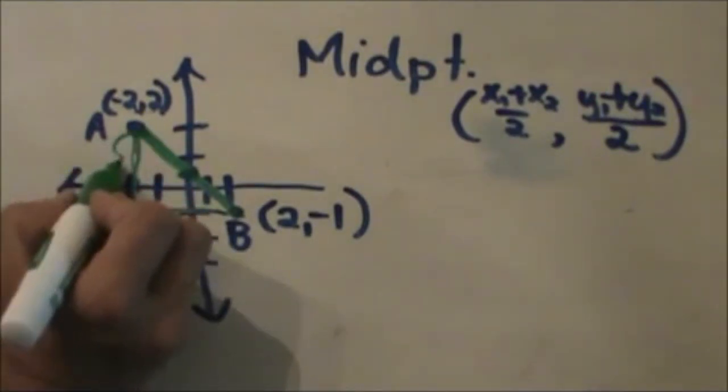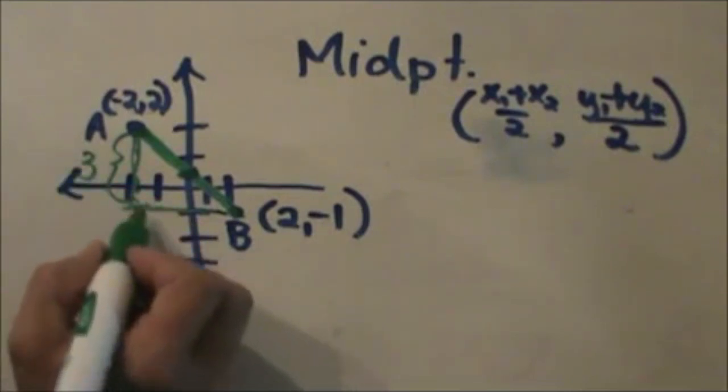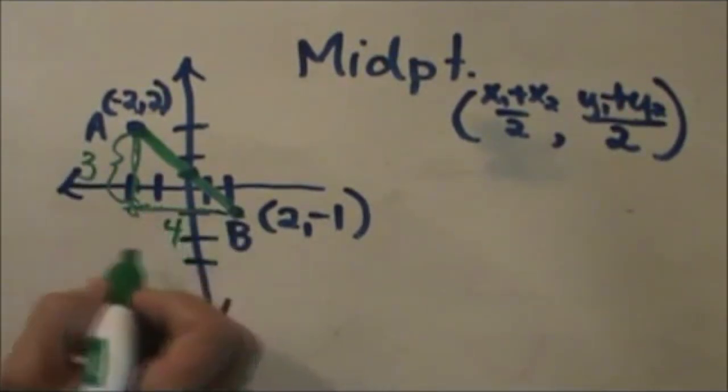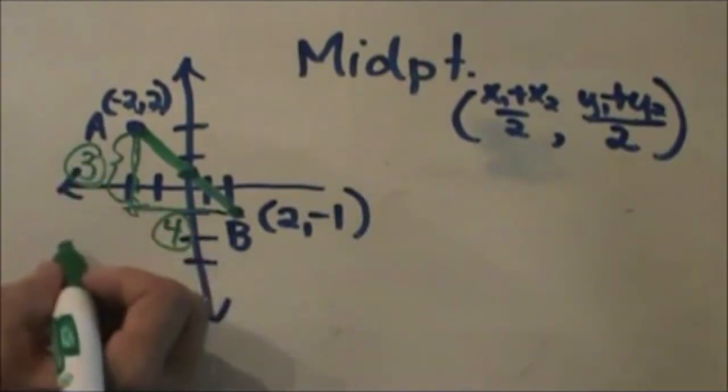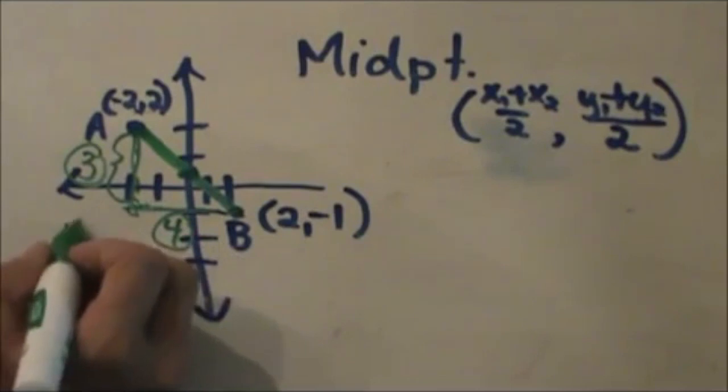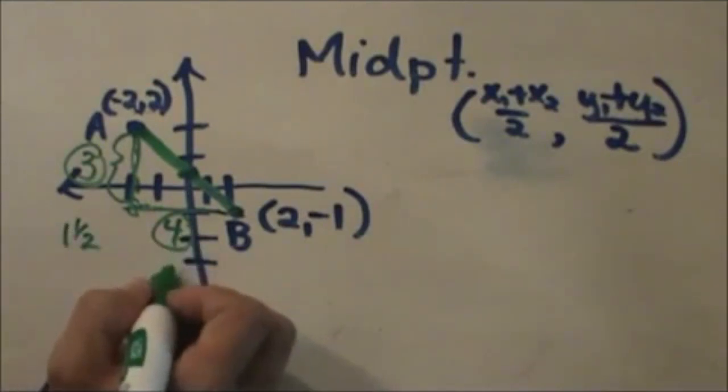This side over here is three units. This side is four units. I am going to take half of each side, so half of three is one and a half and half of four is two.